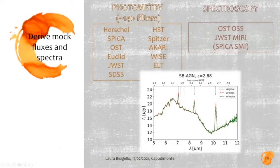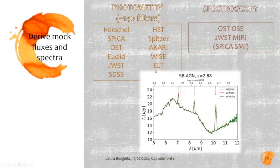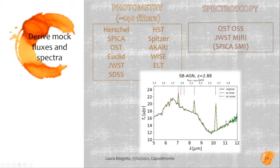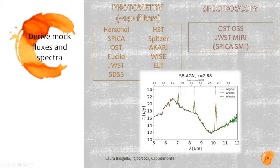The last step is photometry and spectroscopy, the main observables. We currently have about 140 filters for photometry — for a number of current and future telescopes not only in the infrared — and these can be easily expanded. For spectroscopy, we currently have three options: the SPICA SMI, the JWST MIRI low-resolution spectrometer, and the OST OSS spectrometer. This is an example spectrum for JWST MIRI, showing the range from 5 to 12 micrometers: in black is the original template without emission lines, in red with emission lines included, and in green the final spectrum with noise.